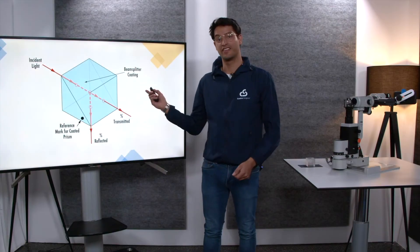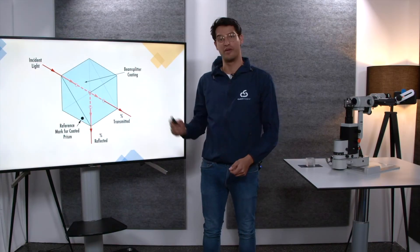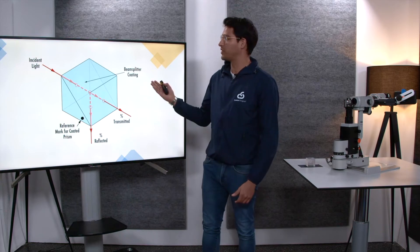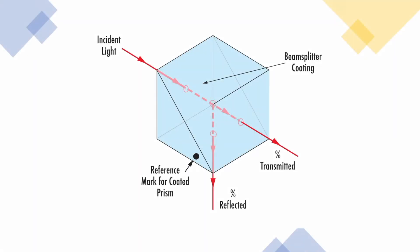This is a beam splitter. A beam splitter splits an incident light beam into two different beams: a transmitted and a reflected light beam.